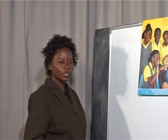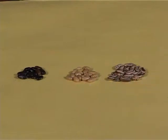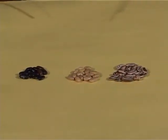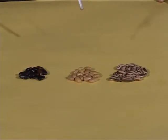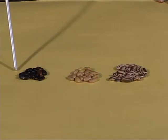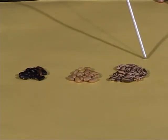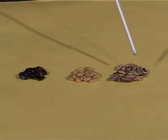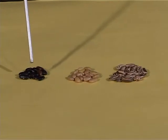Now we'll look at variation in plants. We are going to use bean seeds to explain variation in plants. When you look at these varieties of bean seeds, they are different in color. This variety is black in color, this one is yellow in color, this one is brown in color. Apart from the color, you find that this variety is striped while the others are not striped. This is a good example of variation in bean seeds.